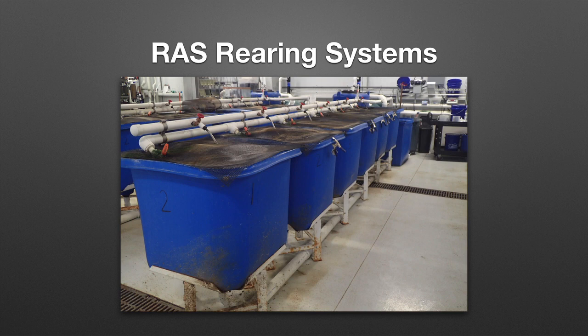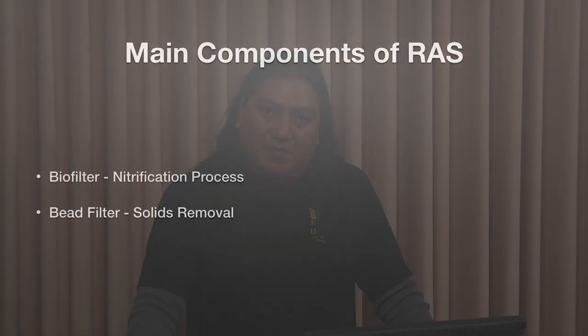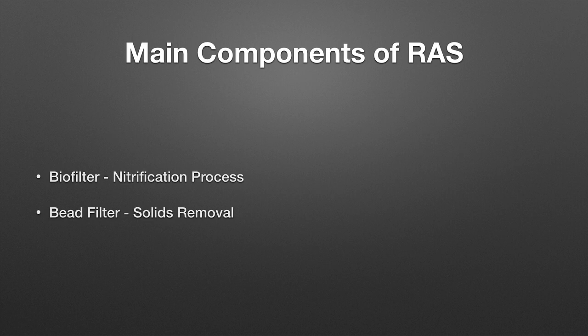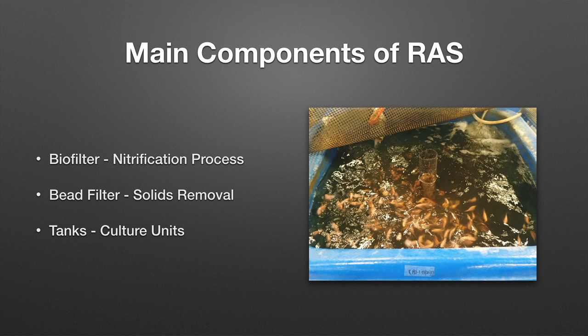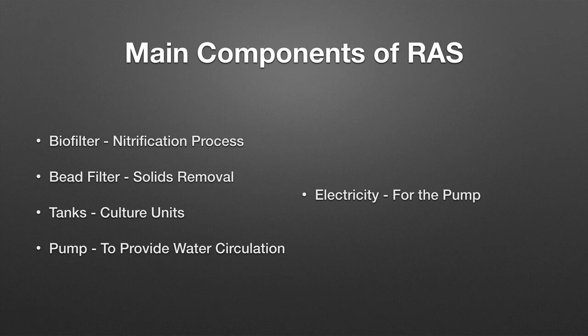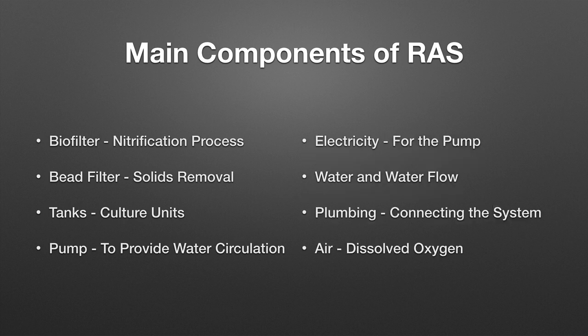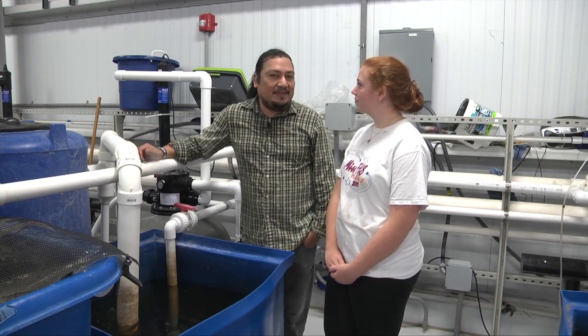Let us now talk about recirculating aquaculture systems. To understand your fish and their culture environment, it's important to know the main components. These are: a biofilter for the nitrification process converting total ammonia nitrogen to nitrite and nitrate, a filter for solids removal, culture units such as tanks, a pump for water circulation, electricity, water and water flow, plumbing connecting the entire system, and air and dissolved oxygen for the fish — without these the fish will not survive.